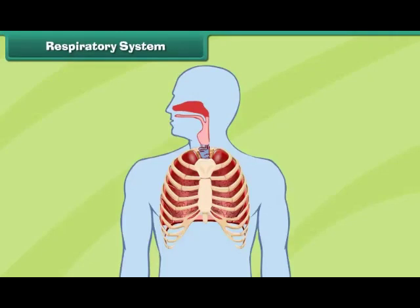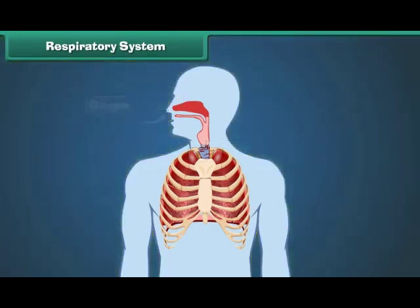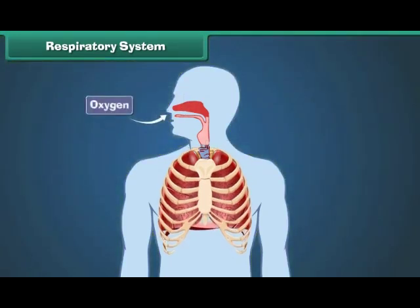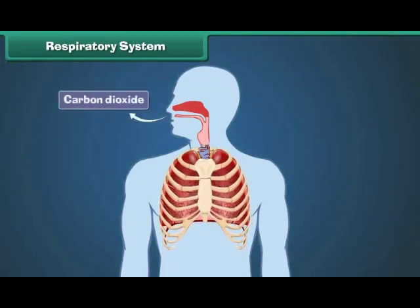Respiratory system: The human respiratory system is made up of the nose, windpipe, and lungs. It helps in taking oxygen from the air and removing carbon dioxide from the human body.